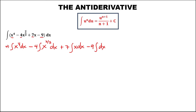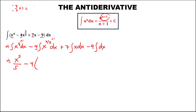For the last term, minus 9 times the integral of dx, which is x. To evaluate the antiderivative: add 1 to the exponent — this becomes x to the power 5, with denominator 5. For the fraction 2/3 plus 1: we have 2 plus 3, that's 5, so this becomes x to the power 5 over 3, with denominator 5 over 3.